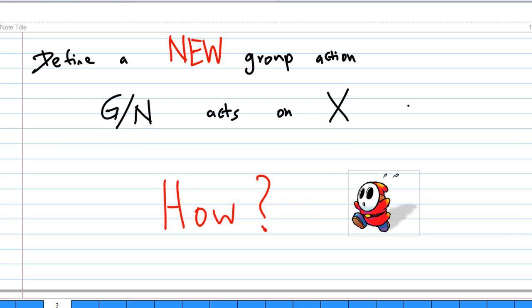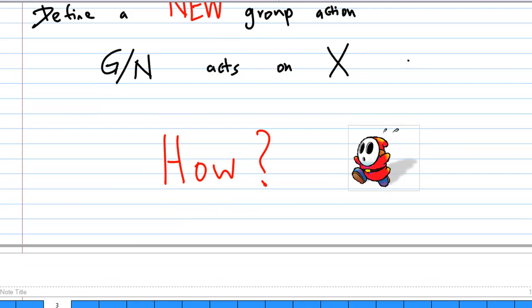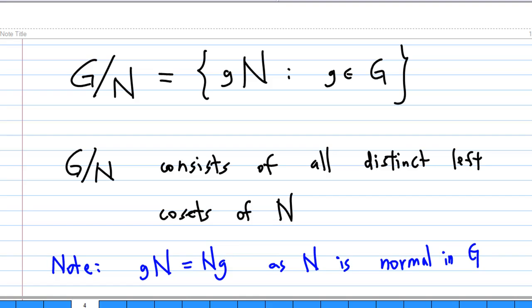Now, I am going to define a new group action, the quotient group G by N acts on X. First of all, we notice that G by N consists of all the left cosets gN for all element g of the group G. Notice that there is no distinction between left coset and right coset because N is normal in G.